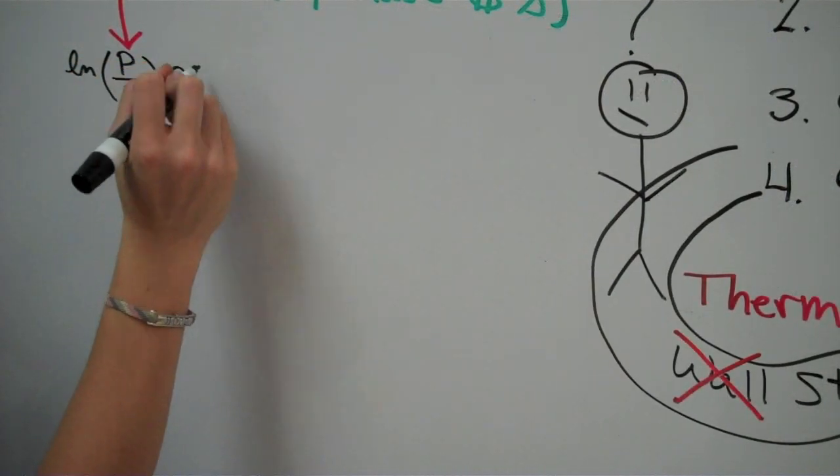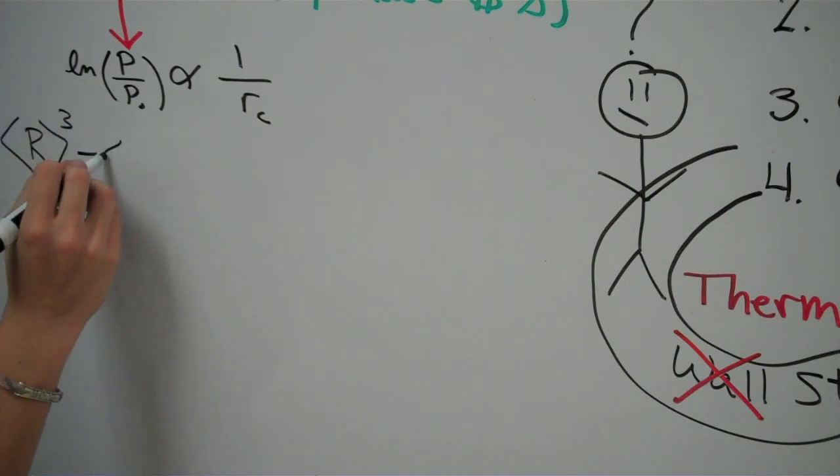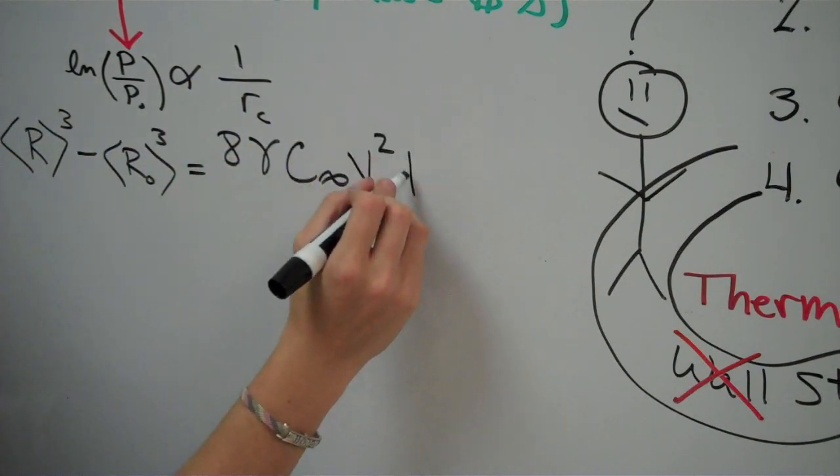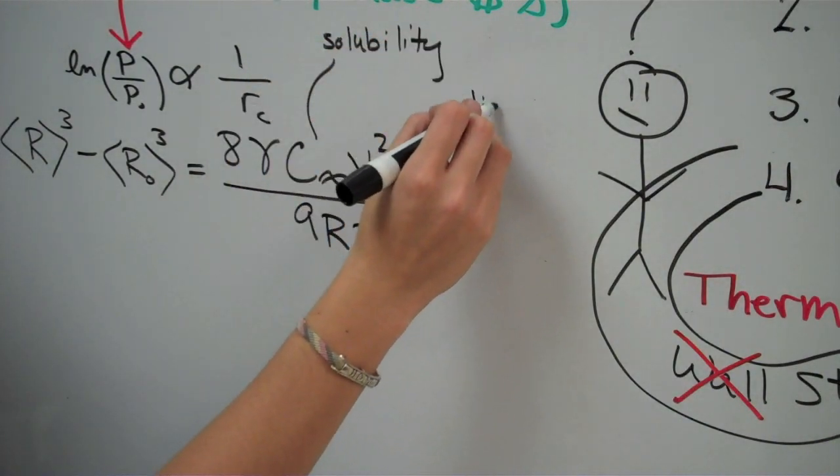This means they evaporate faster. The rate of growth is governed by the Oswald equation. This relates the diffusion of the molecules that make up the drop through the fluid, the solubility, the interaction of the drops with the fluid, and the difference of the average radii.